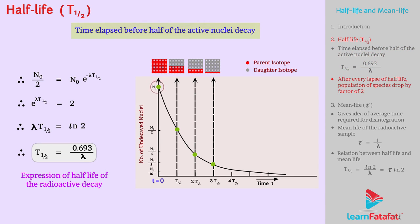After every lapse of half-life, i.e., t₁/₂, the population of given species drop by factor of 2.